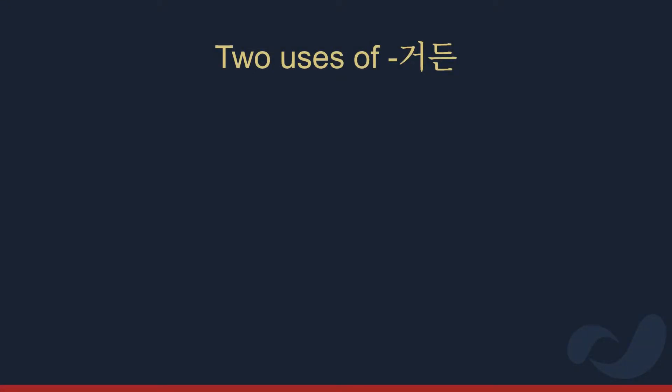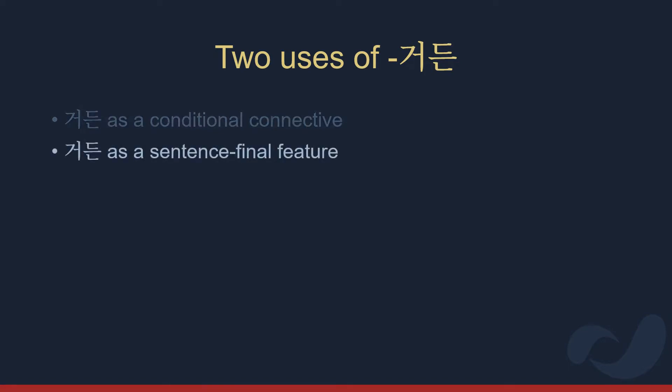Hello, welcome. Today we'll look at 거든 and see how this grammatical form is closely linked to the flow of information in conversation. To begin with, we need to separate the two kinds of 거든. There's 거든 as a conditional conjunctive and 거든 as a sentence final form. This video will focus on the second usage.